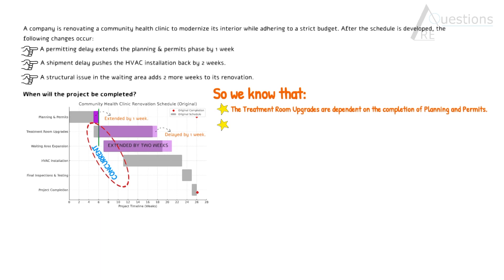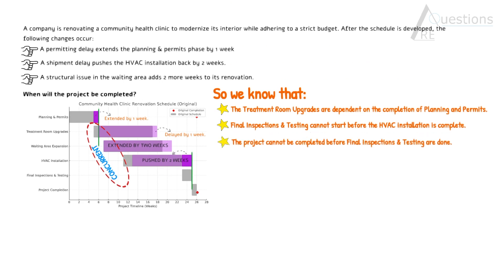Importantly, final inspections and testing cannot start before the HVAC installation is complete. We know that HVAC installation is delayed by two weeks. This will also push the final inspection and testing process, because final inspection and testing is dependent on the HVAC installation activity. And lastly, the project cannot be completed before final inspection and testing are done. Since that process is pushed by two weeks because of the HVAC installation delay, the project completion will also be pushed by two weeks.